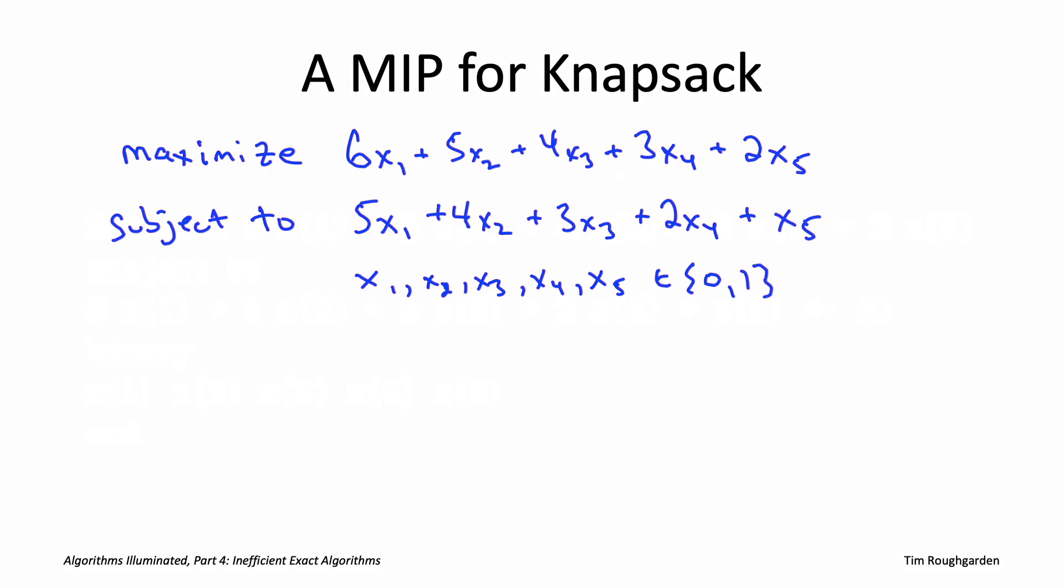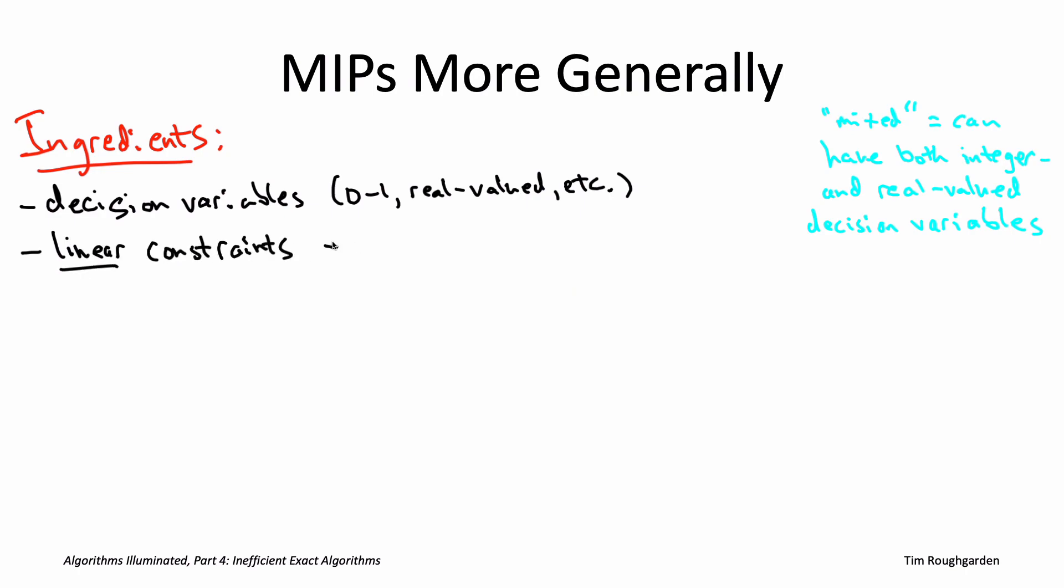It is true that the latest and greatest MIP solvers can also accommodate limited types of nonlinearity like certain quadratic terms, but they typically run much faster when you have just linear constraints and objective functions, and that's what we'll focus on here.